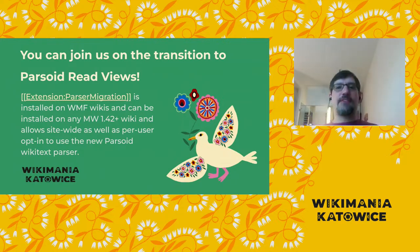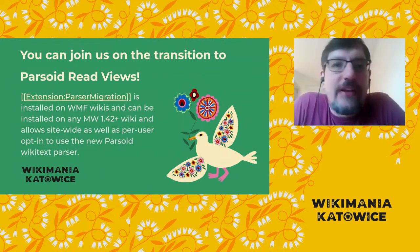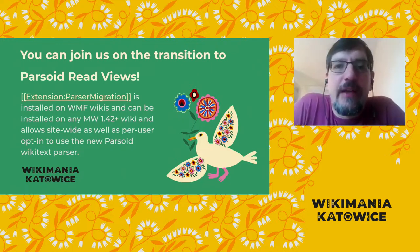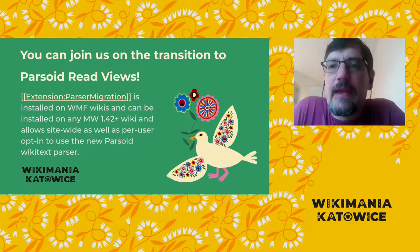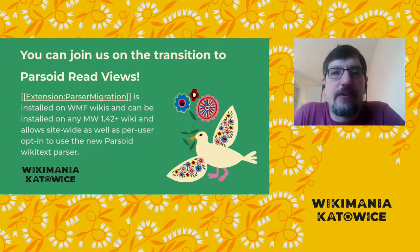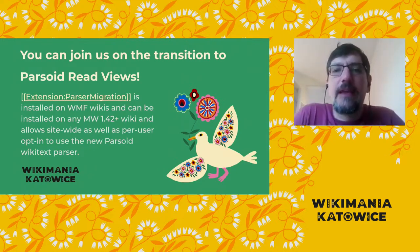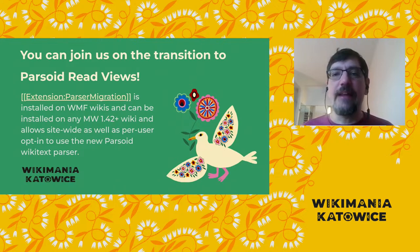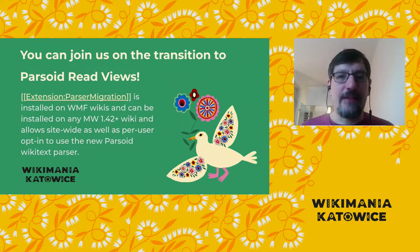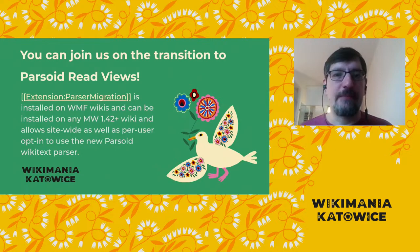This is our first exciting announcement, which we'd like to spread widely: you can help us test Parsoid readviews. The Parser Migration extension is installed on all WMF wikis, and third-party wikis can install it as well. It allows per-user opt-in to use Parsoid for article views instead of the legacy parser. In most cases, we expect this to be super boring, because the Parsoid output will look identical to the legacy parser output — 99% of pages are likely pixel-by-pixel identical. However, the point of doing the test and opting in early is to find the places where this isn't the case and get a head start on resolving compatibility issues.